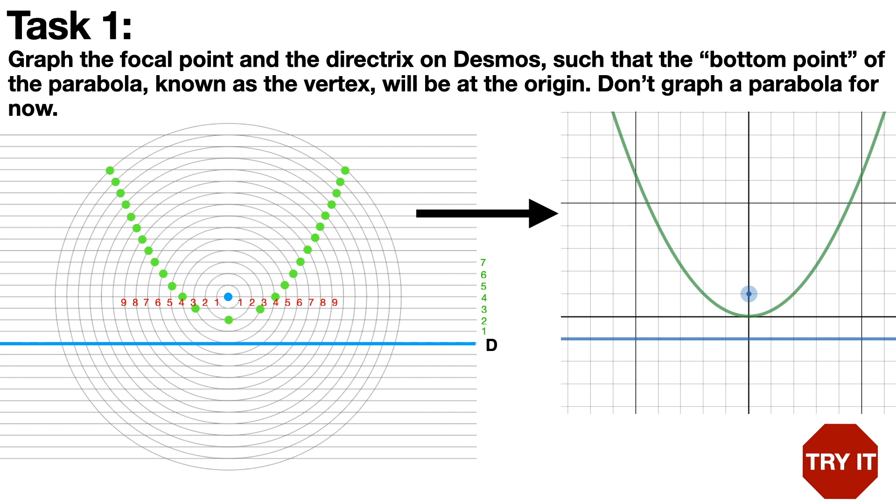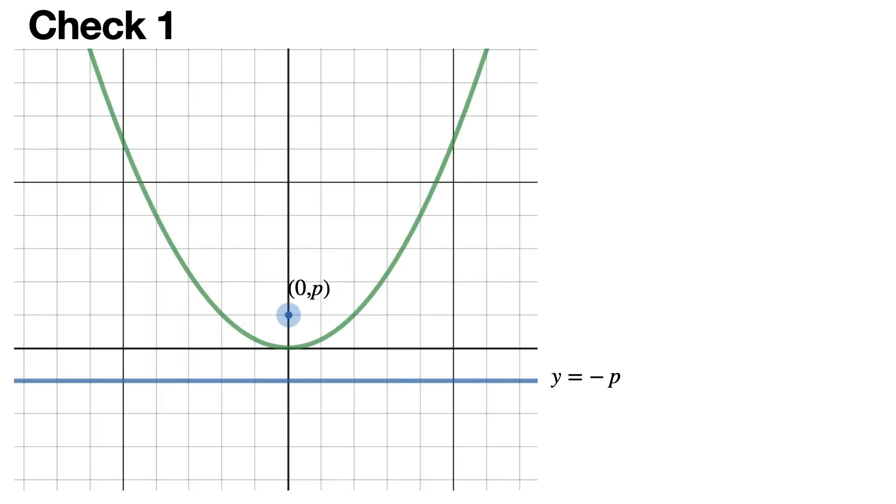Did you try it? Let's see what you could have done. First off, we never really said how far the focus is from the origin and how far the directrix is from the origin. In these cases, we would want to assign it a variable, in this case p, a parameter. That distance can change as you adjust p on Desmos. If you have p be positive, then in order for the line to appear below, that would have to be y equals negative p.